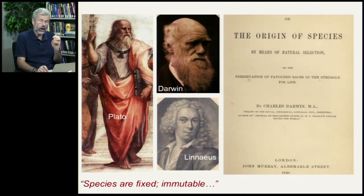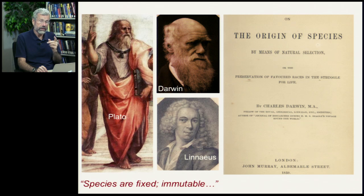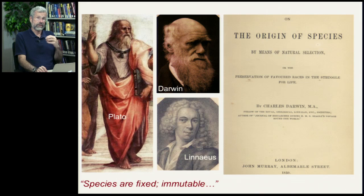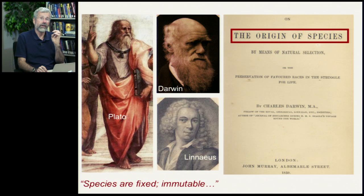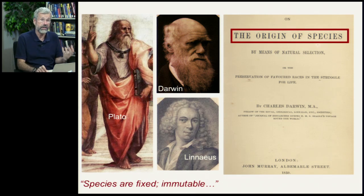But when Darwin finally published his big book about evolution, he didn't call it evolution — he called it the Origin of Species. Because the sheer fact that new species could appear was completely contradictory to the way the world was viewed up to that point. The Origin of Species is really addressing processes that would ultimately lead to speciation.